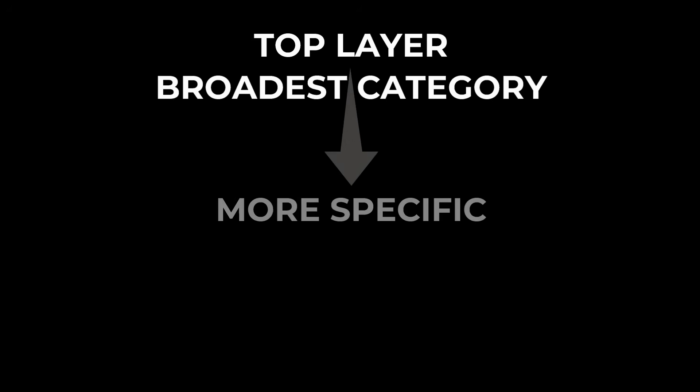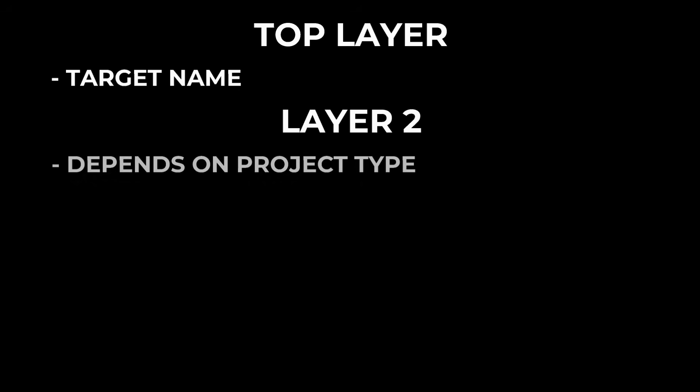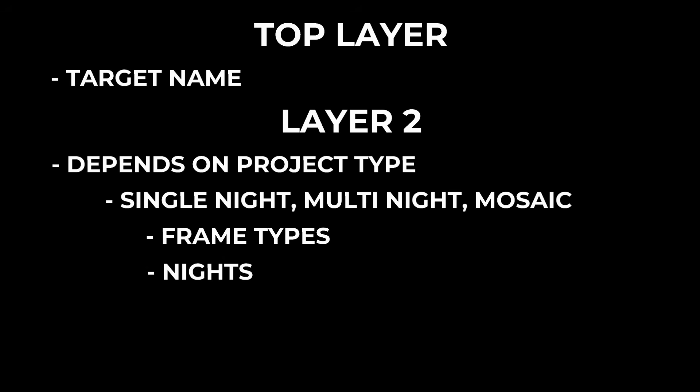When thinking about file structure, it's easiest to think of it like layers. At the very top layer you've got the broadest category; each layer below it gets more specific until you're right down to the exact frames. The top layer, layer one, is always your target name. From there, layer two depends on what kind of project you're doing. If it's a single-night one-shot color project, you go straight to folders for lights, darks, flats, and flat darks — what I'll call frame types. If it's multi-night one-shot color, layer two becomes your nights. If you're shooting mono, layer two is your filters.